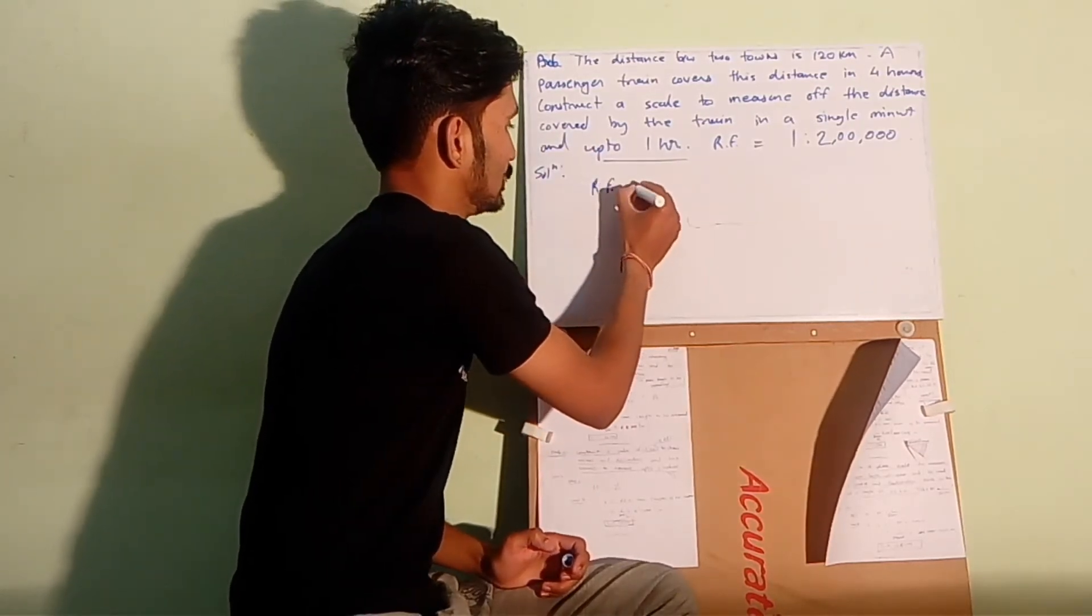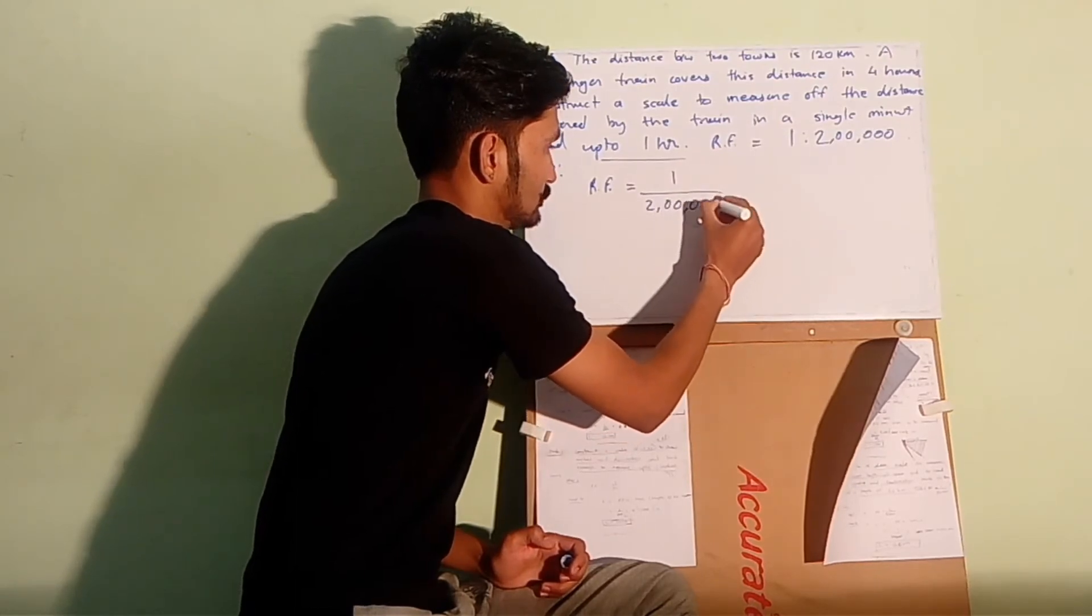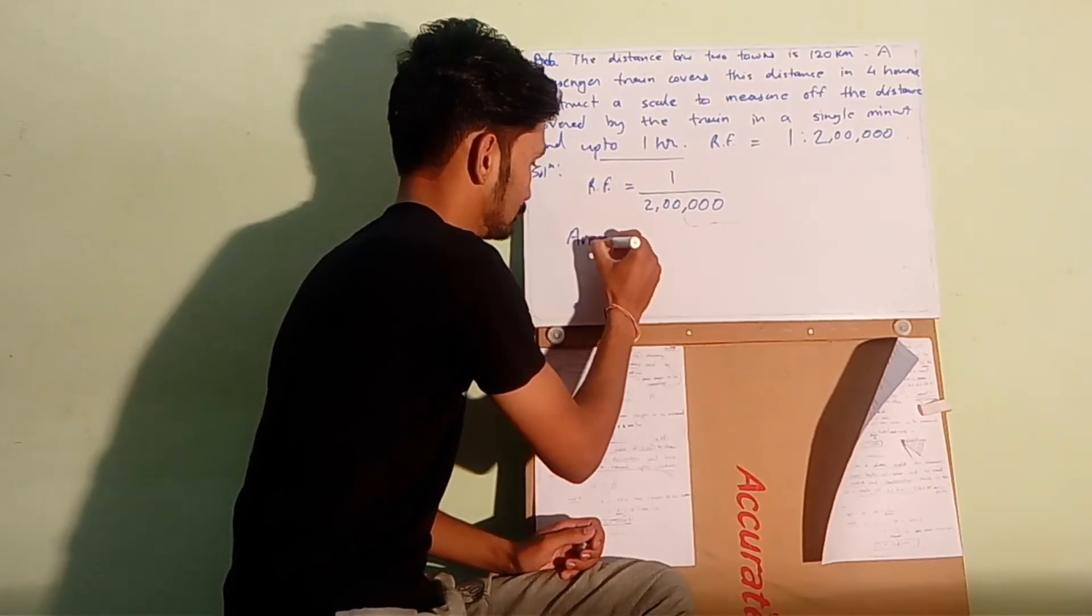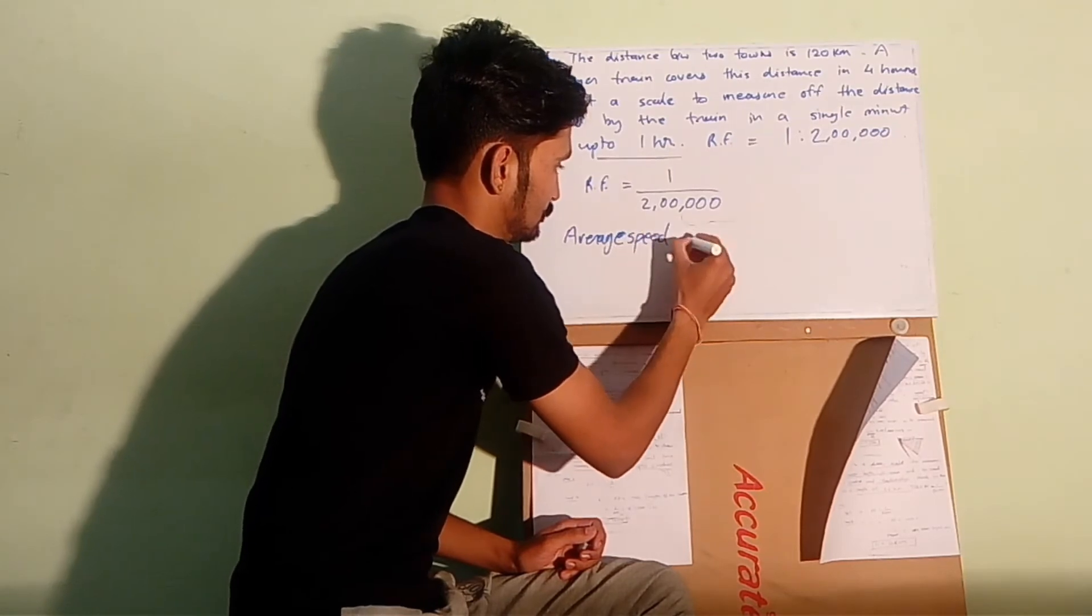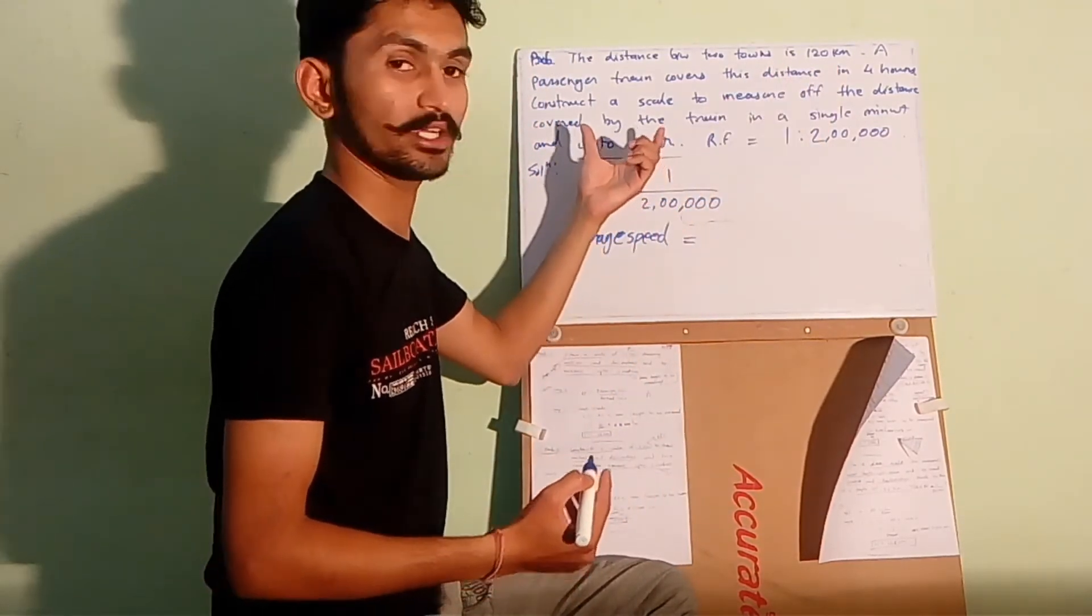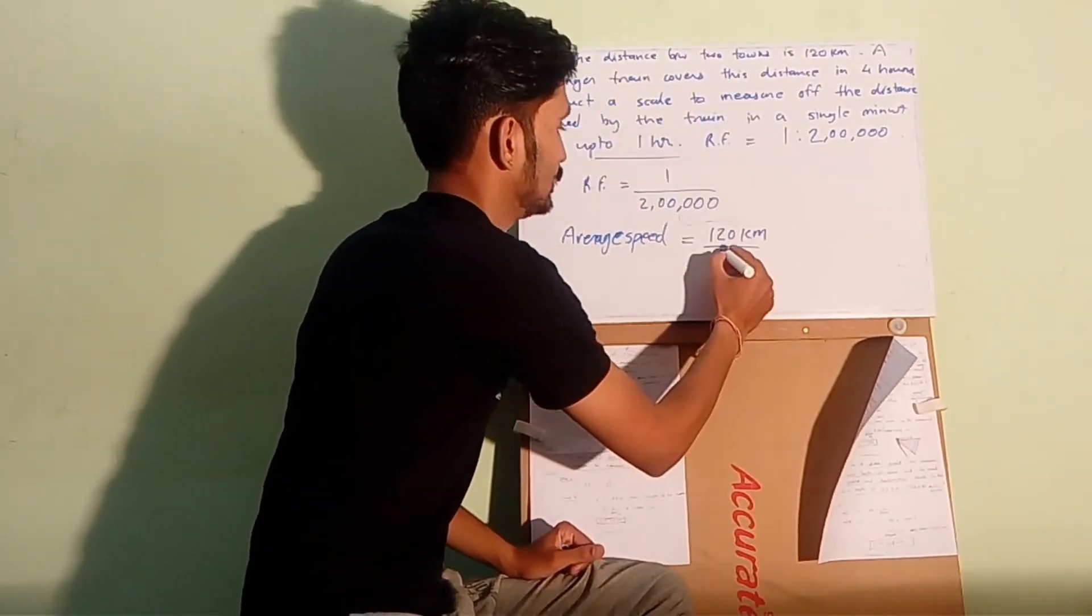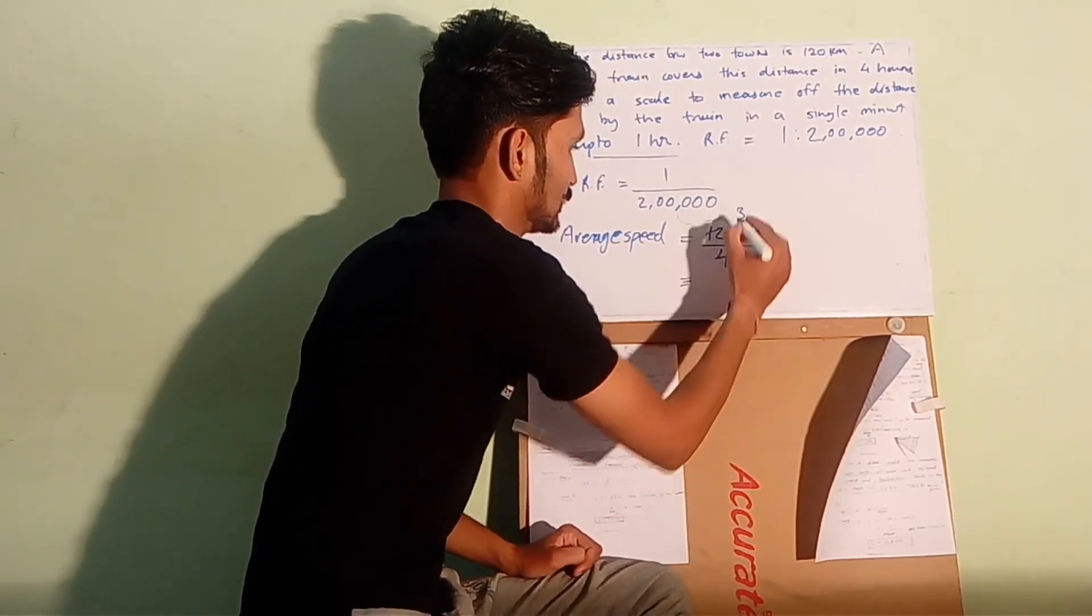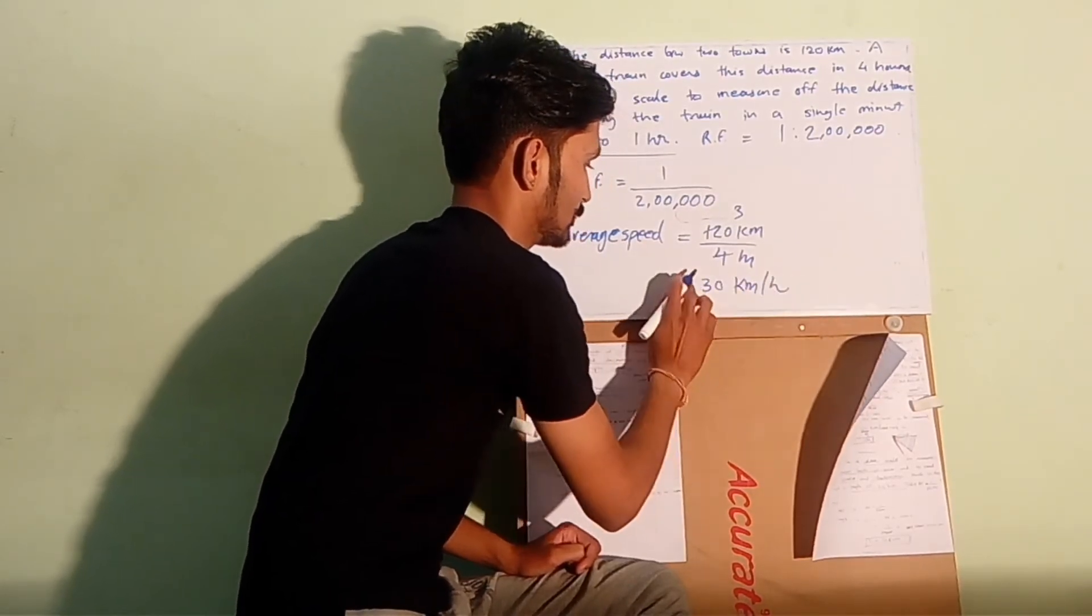Firstly, RF is directly given: 1 divided by 2 lakh. And average speed of the train will be the distance covered by the train divided by the time taken. The distance covered by the train is 120 km and the time taken is 4 hours. So the average speed will be 30 km per hour.